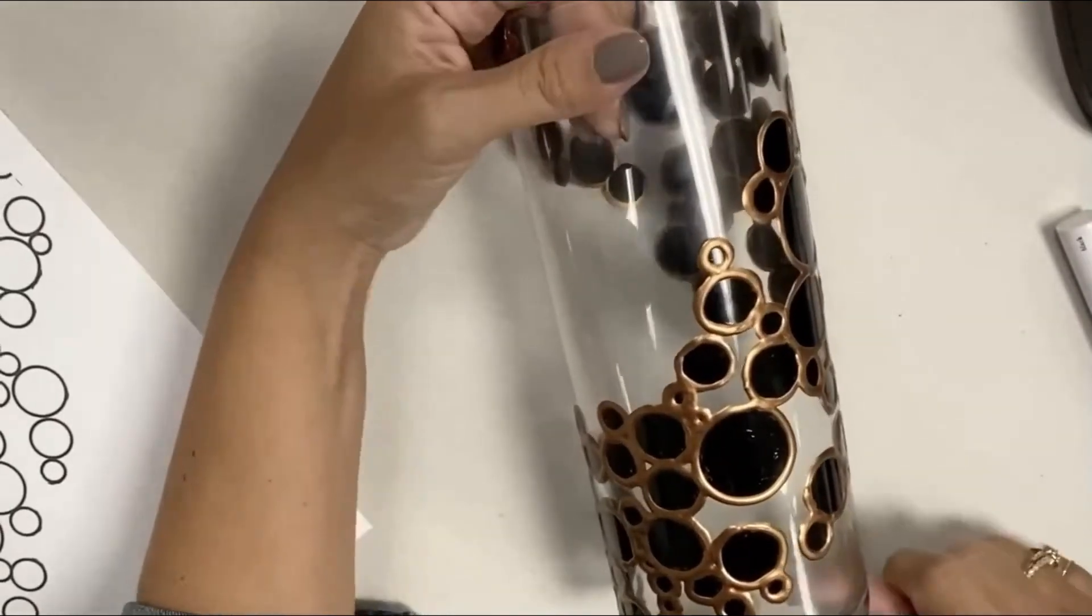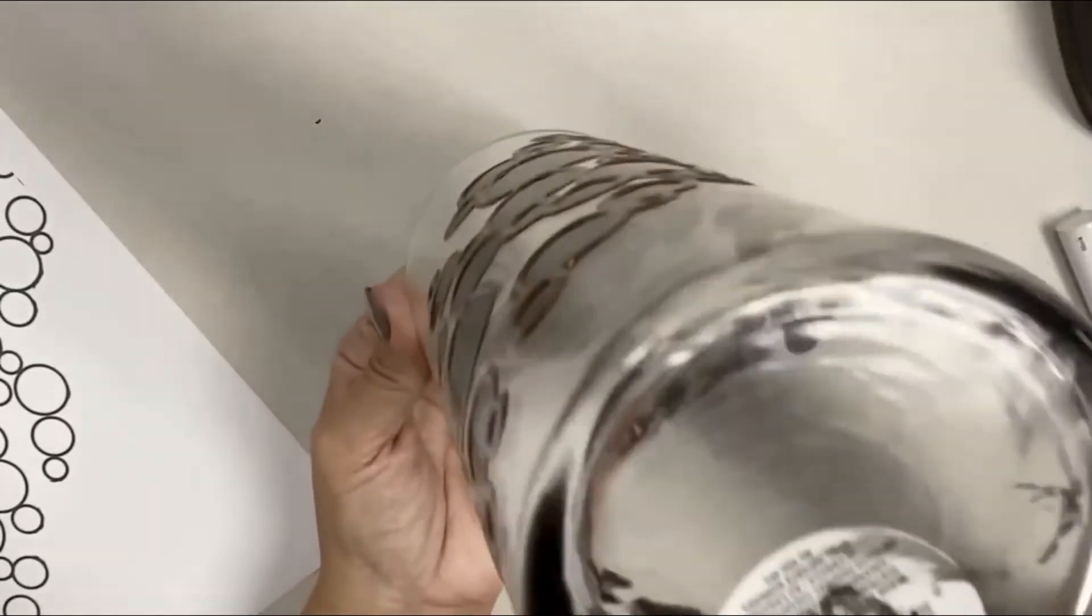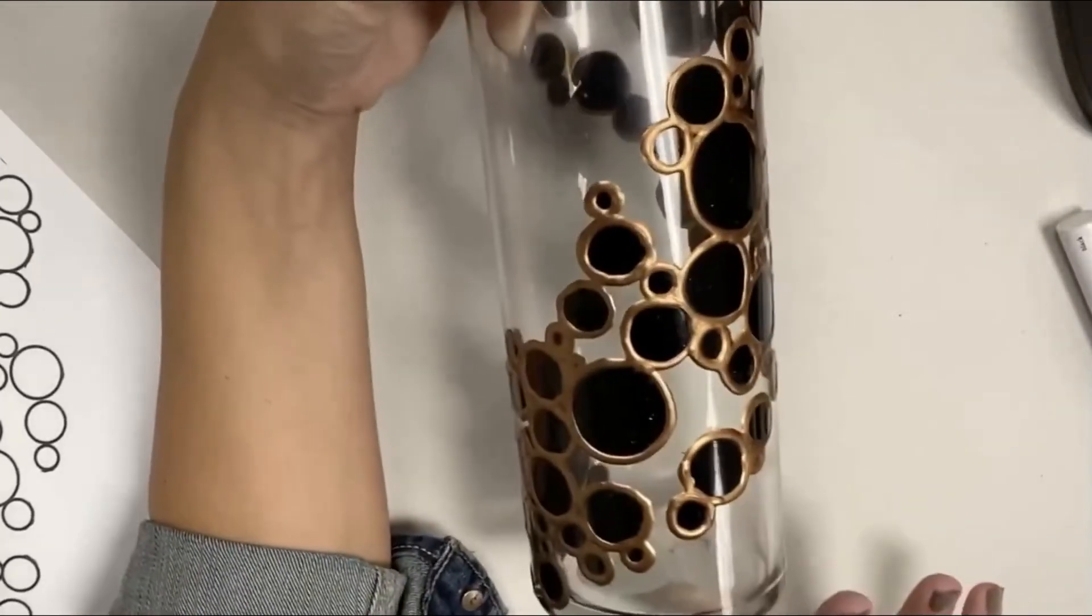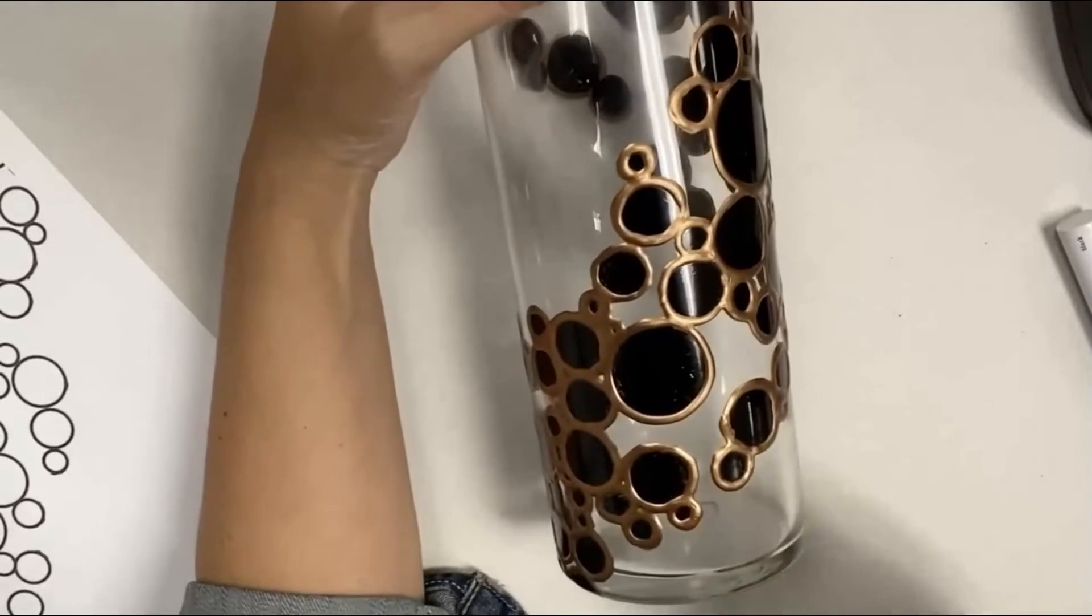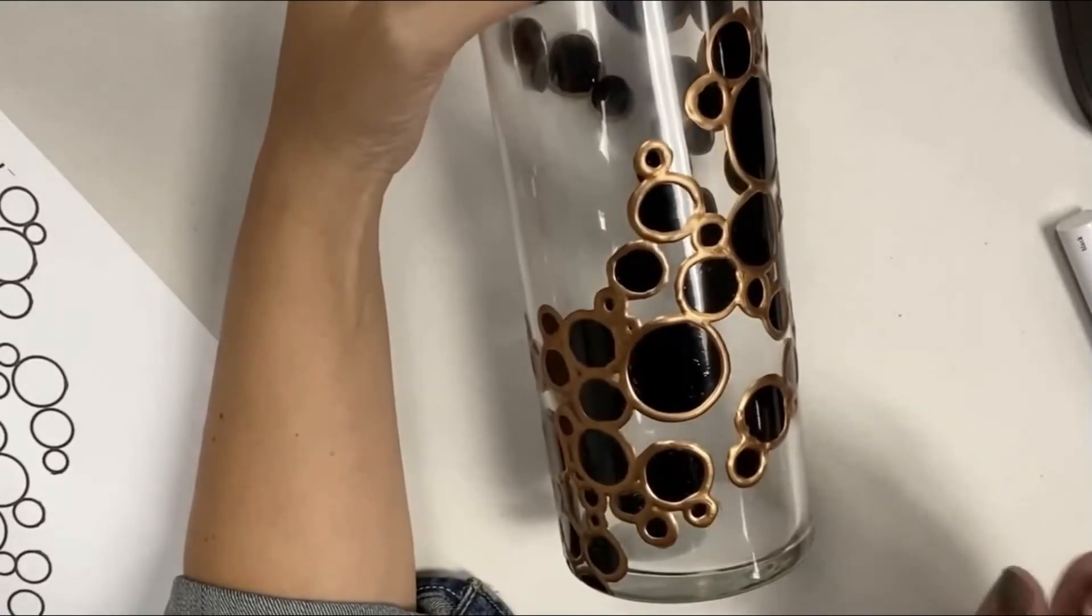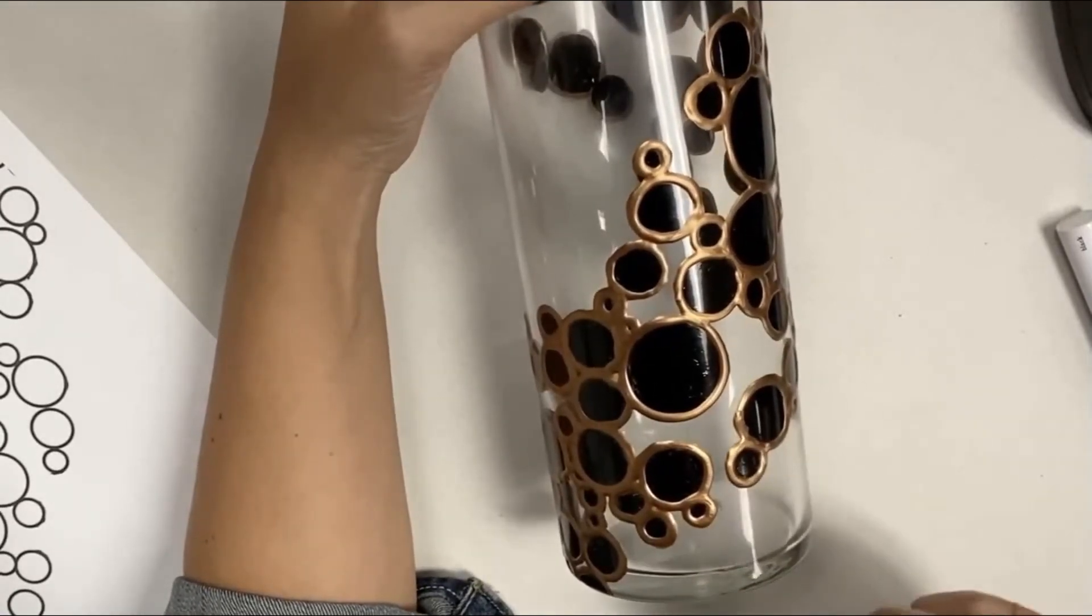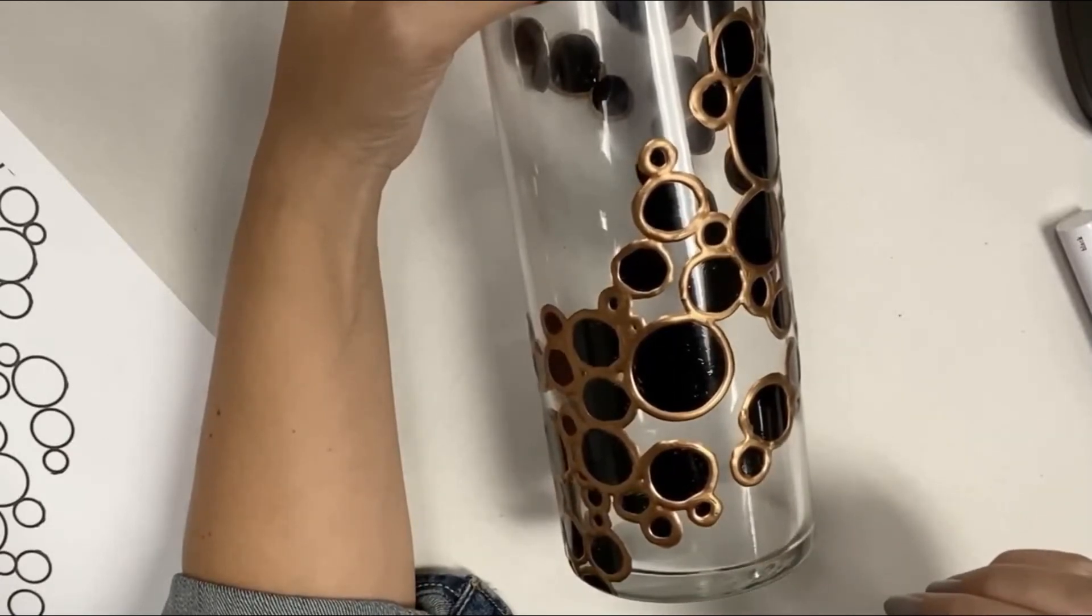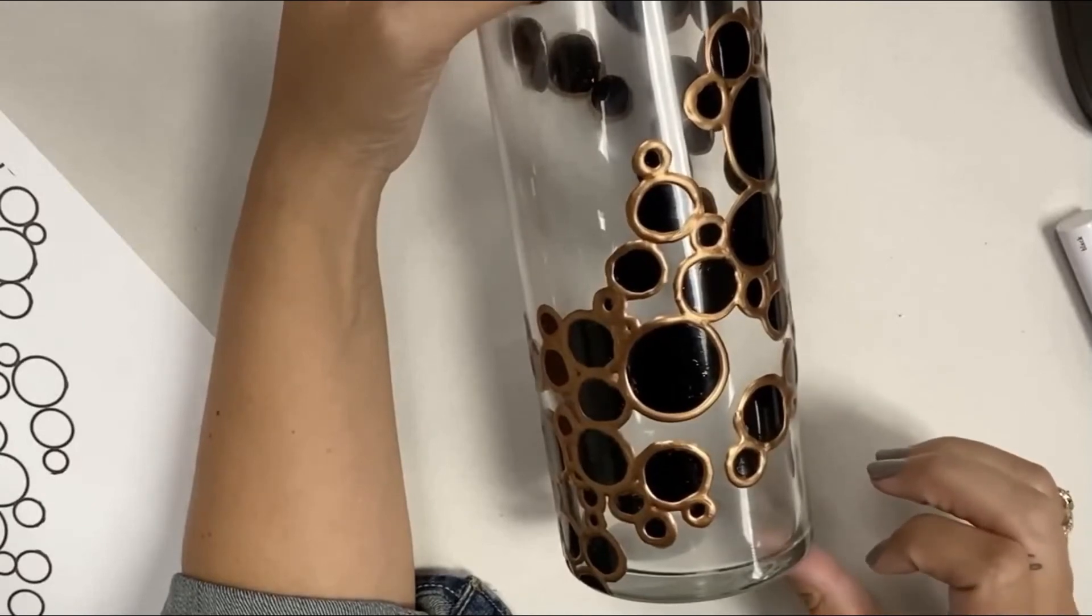And then the last thing is, this tag right here would drive me absolutely crazy. So a little tip: the absolute best thing that we've found that removes stickers and tags from glass or any other kind of item that you buy that has a tag is lighter fluid—not Goo Gone, nothing, no other kind of product that you buy like that, but lighter fluid.